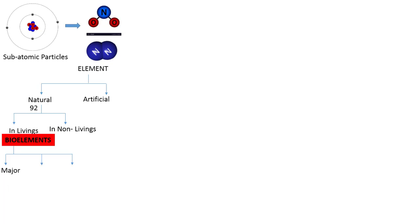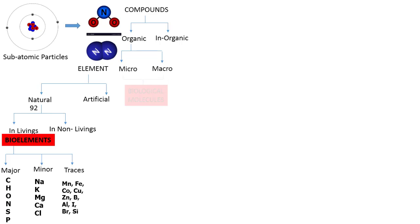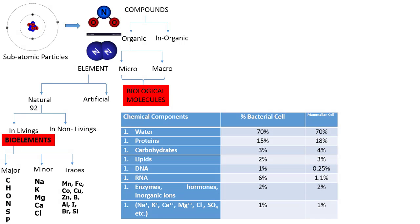Trace elements include manganese, iodine, bromine, etc. Compounds are of two types: inorganic and organic. Organic compounds are further divided into micro and macro molecules, which collectively form the biological molecules. The most abundant biological molecule in both bacteria and mammals is water. In animals, the next highest is protein, while in plants the highest concentration is carbohydrates.